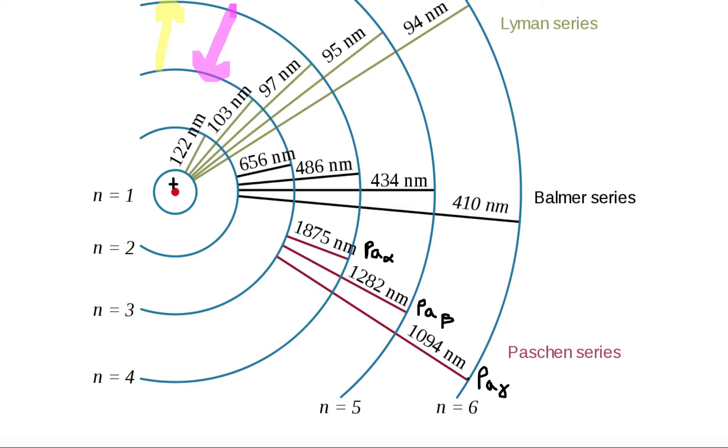And then you have, similarly, the Paschen gamma line in emission, where the transition is from n equals 6 downward to n equals 3, or in absorption, where the electron would absorb a photon of exactly 1094 nanometers to move upward from the n equals 3 to n equals 6.